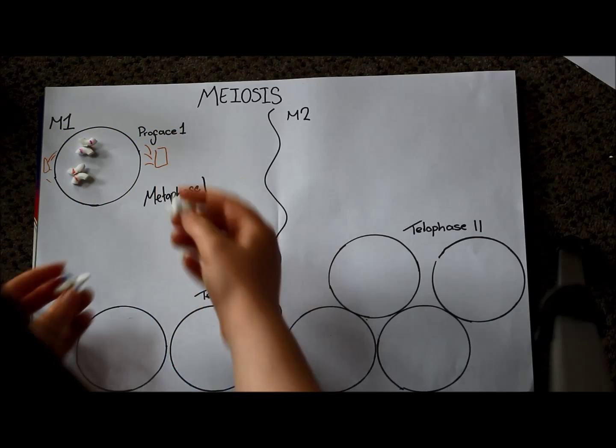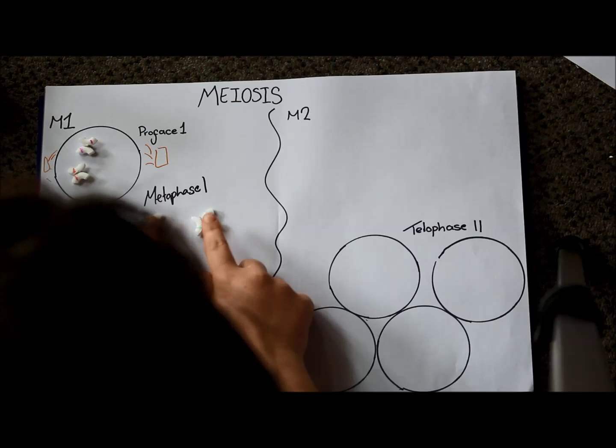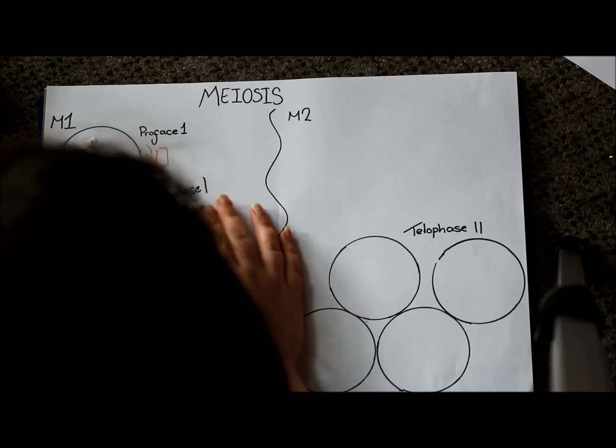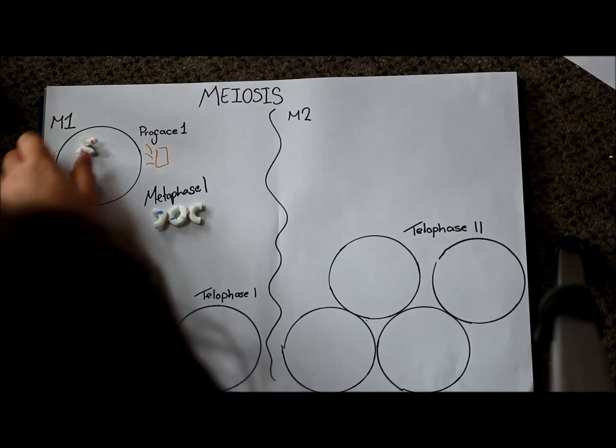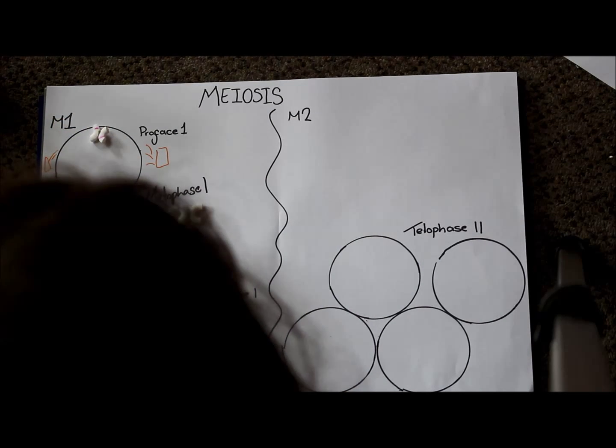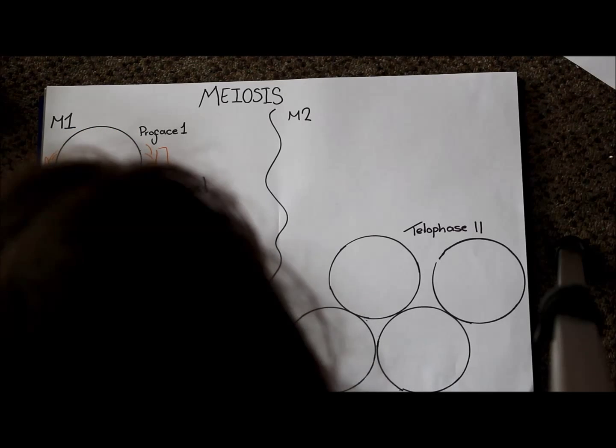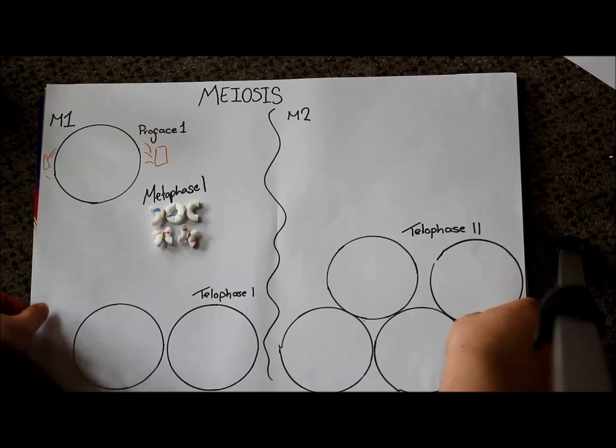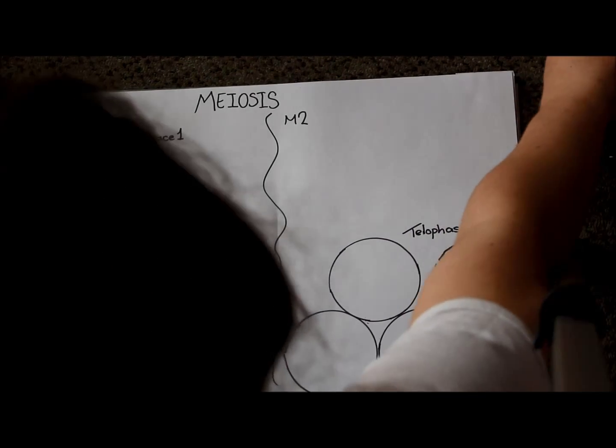Remember we said that these were the same gene but different alleles. Well, the chromosomes that are the same and that have the same genes at the same locus sit next to each other on the equator. Like this. And while they're there, they might do something called crossing over.